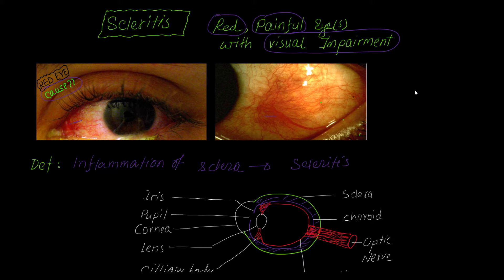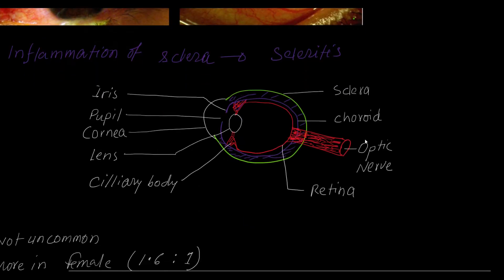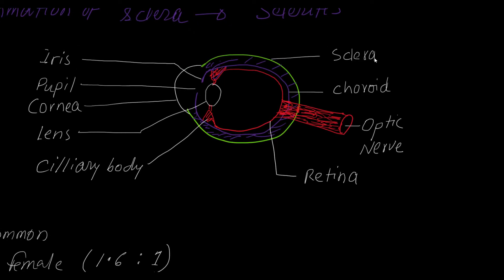I am going to talk on scleritis over the next few minutes. Inflammation of the sclera is called scleritis. Here is the anatomical representation of our eye for easy understanding. This is the sclera — the outer coat of our eyeball. The anterior portion of the outer coat is called the cornea.